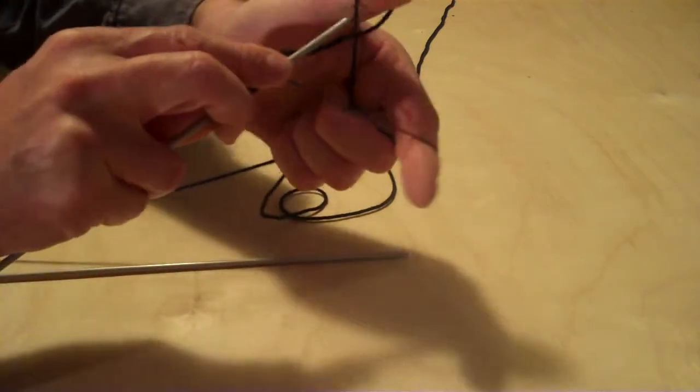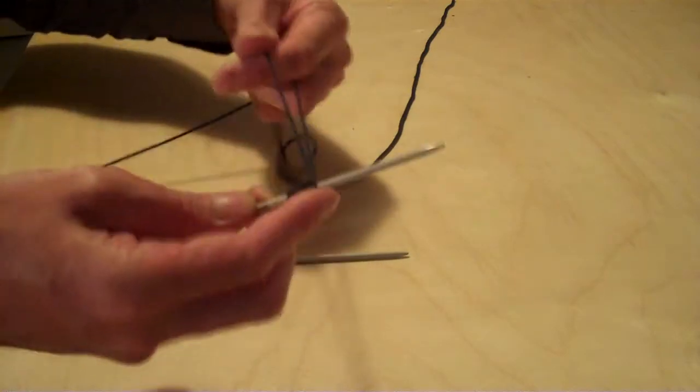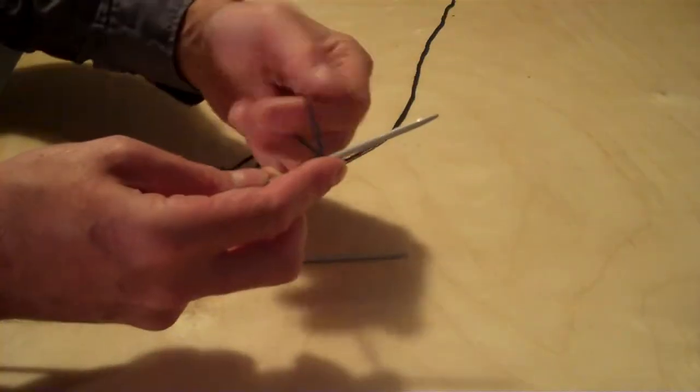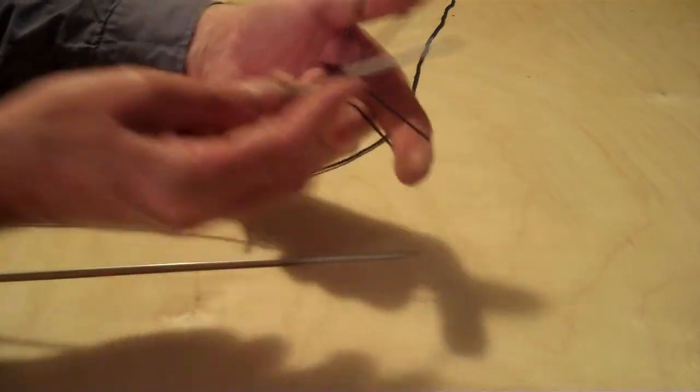And actually, when you get into it, you can go quite fast. I'll do that slowly again. So fingers through, loop over. Grab the two tails with your fingers there.